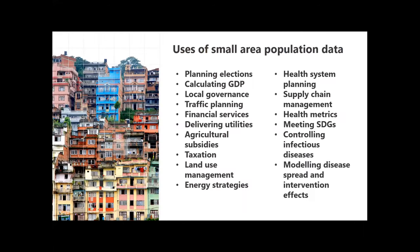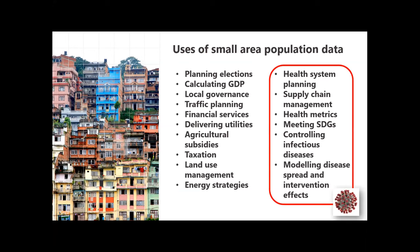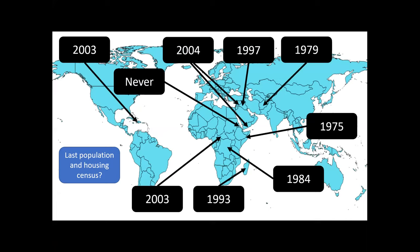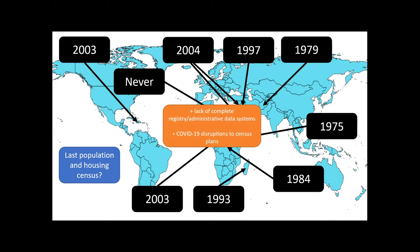Small area population data underlies so much of government and other decision-making, particularly in the health field — especially right now for COVID control and vaccination planning. The challenges are that in many settings, the last population and housing census was many decades ago, there is often a lack of registry and administrative data systems, and recent disruptions to census plans have occurred because of COVID controls.